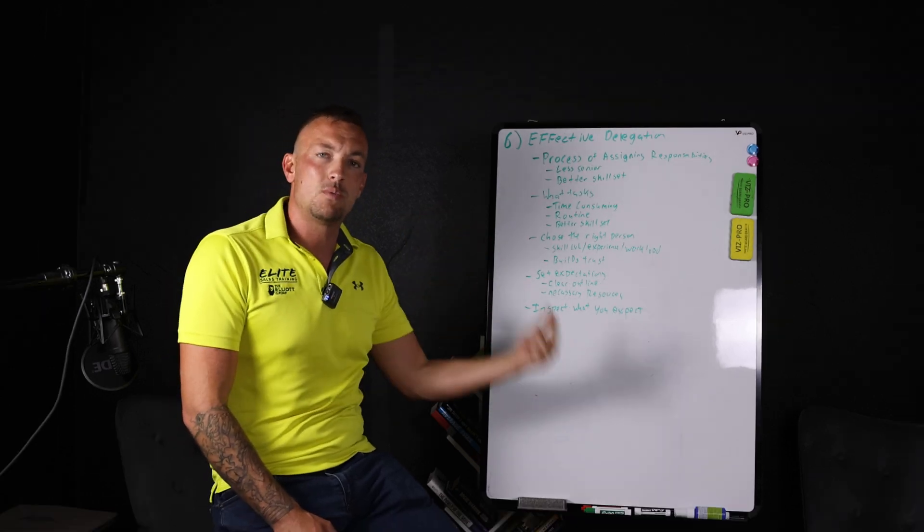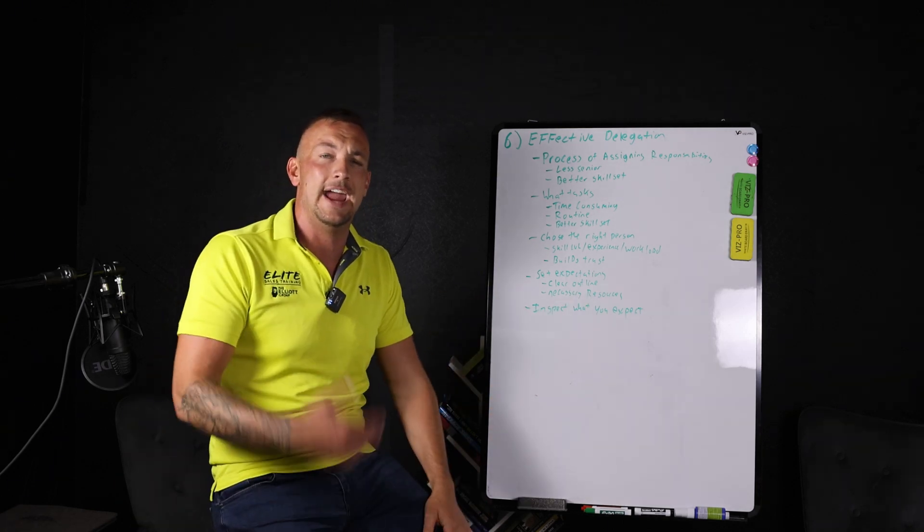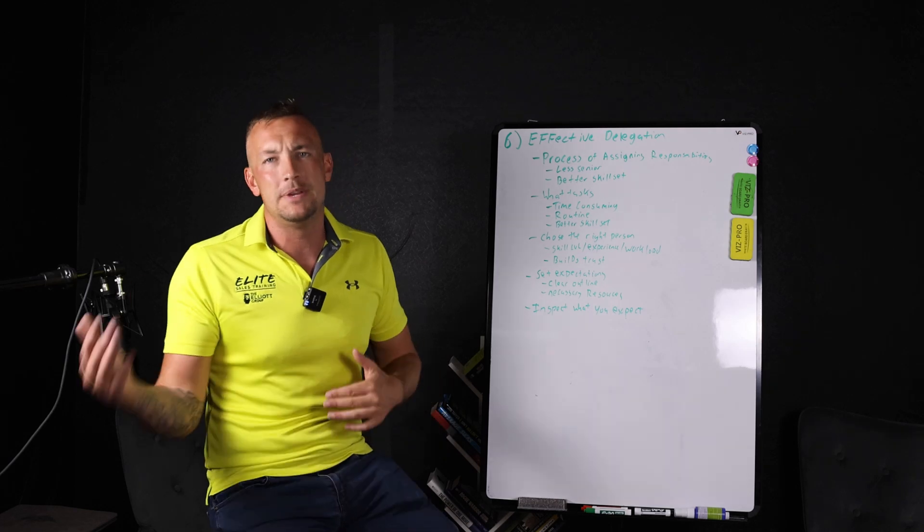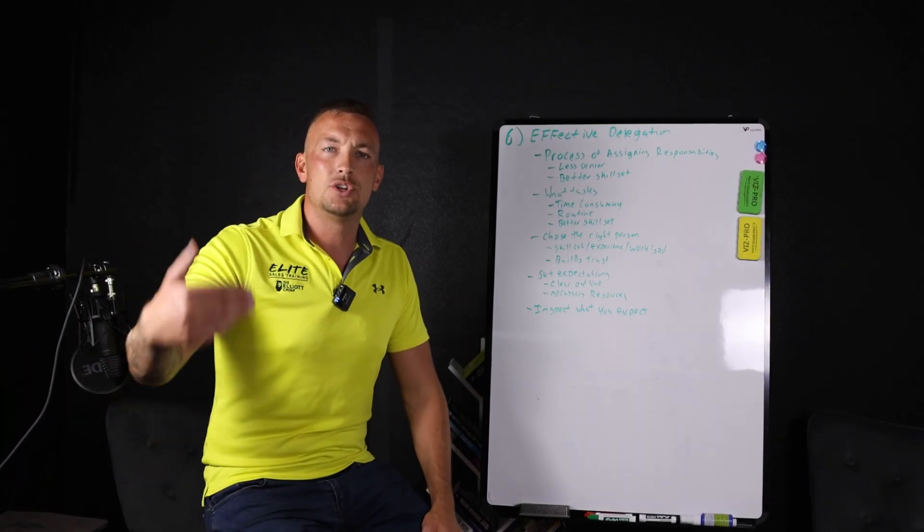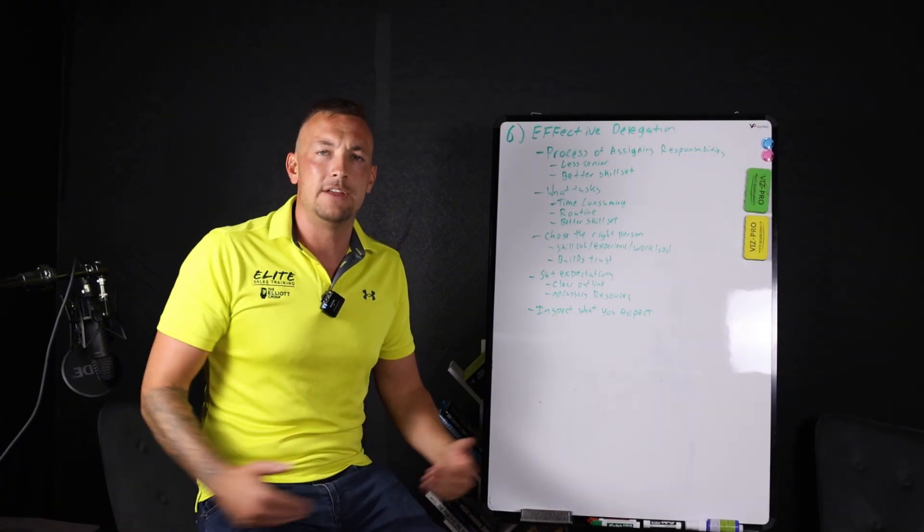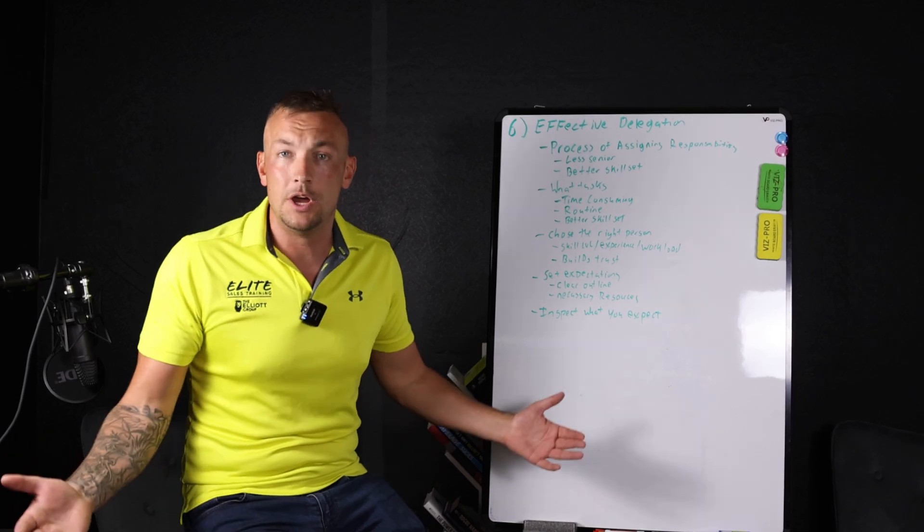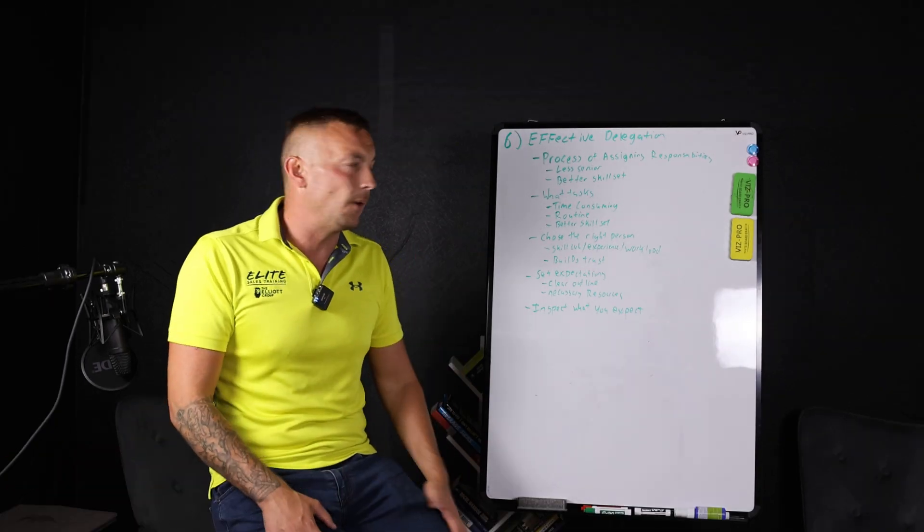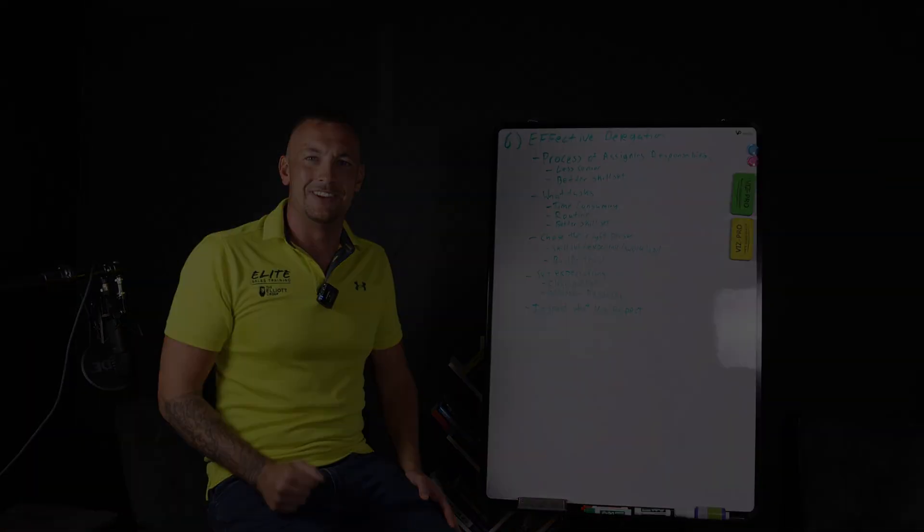Inspect what you expect. This is how you're going to effectively analyze what tasks you can delegate, who to delegate them to, and make sure you have clear goals for that person so they know when they're winning, so they know when they fall short. And that way when you do inspect what you expect, you're able to go back and say, 'Hey, did you do A, B, and C?' Make sure you're an effective delegator, make sure you're doing it right with the right people, and let's move on to seven.